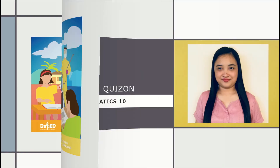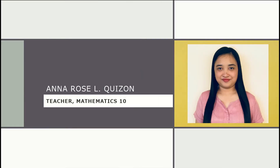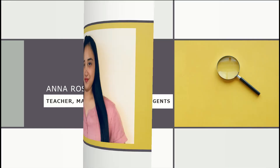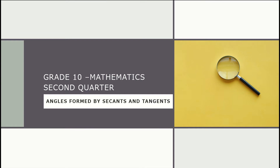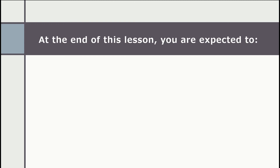Hello, acute angels! This is Teacher Anna, and welcome to another Matinee episode. Today we will learn about how to find the measurement of the angles formed by secants and tangents. Before we start, kindly prepare your learning module, pen and paper to write your solutions and answers as we progress. Look for a comfortable and safe place in your home, and prepare yourself to watch and listen carefully. This episode is a continuation of the Week 5 to 6 lessons.